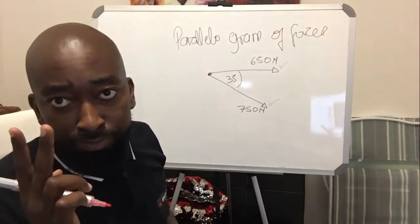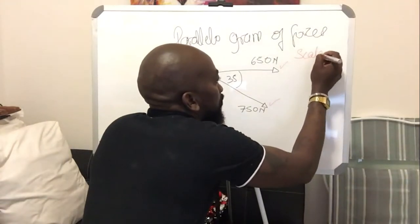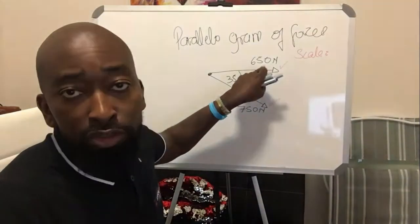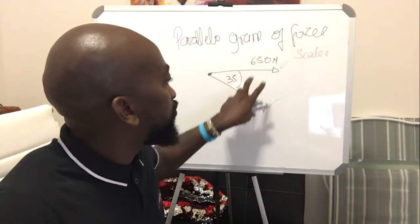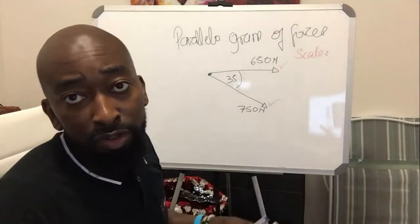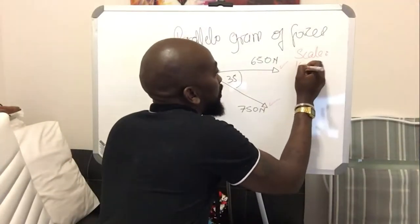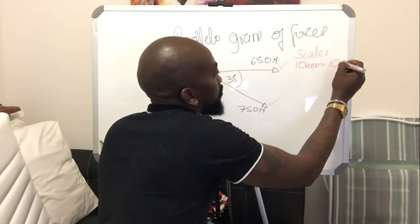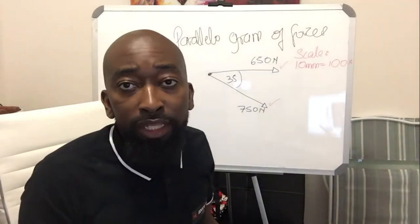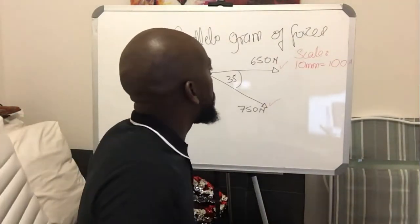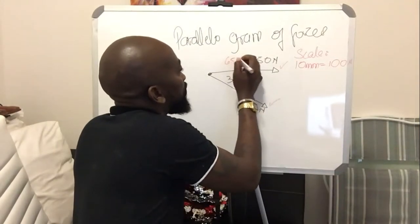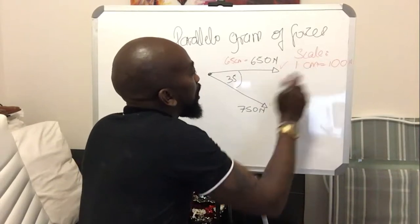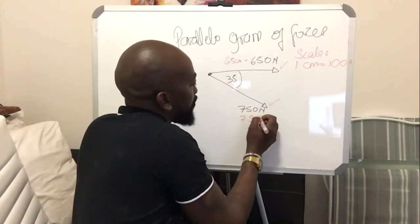Before you apply the parallelogram, you need to get your scale right. You need to draw this on your answer sheet. Since we have 650 Newtons and 750 Newtons, you need to scale them down to drawable lengths. Let's say 1 centimeter equals 100 Newtons. Therefore, 650 Newtons becomes 6.5 centimeters and 750 Newtons becomes 7.5 centimeters.